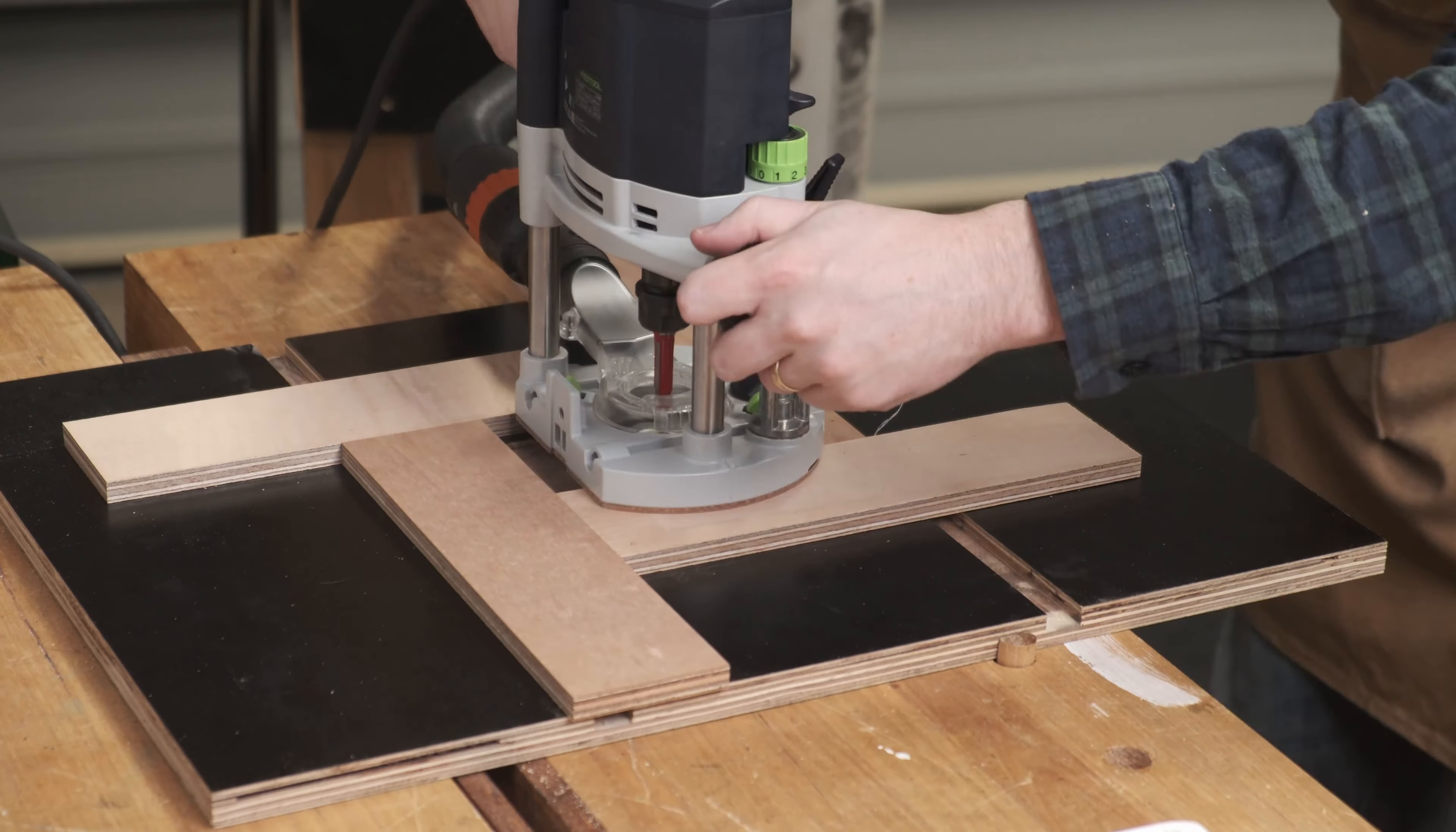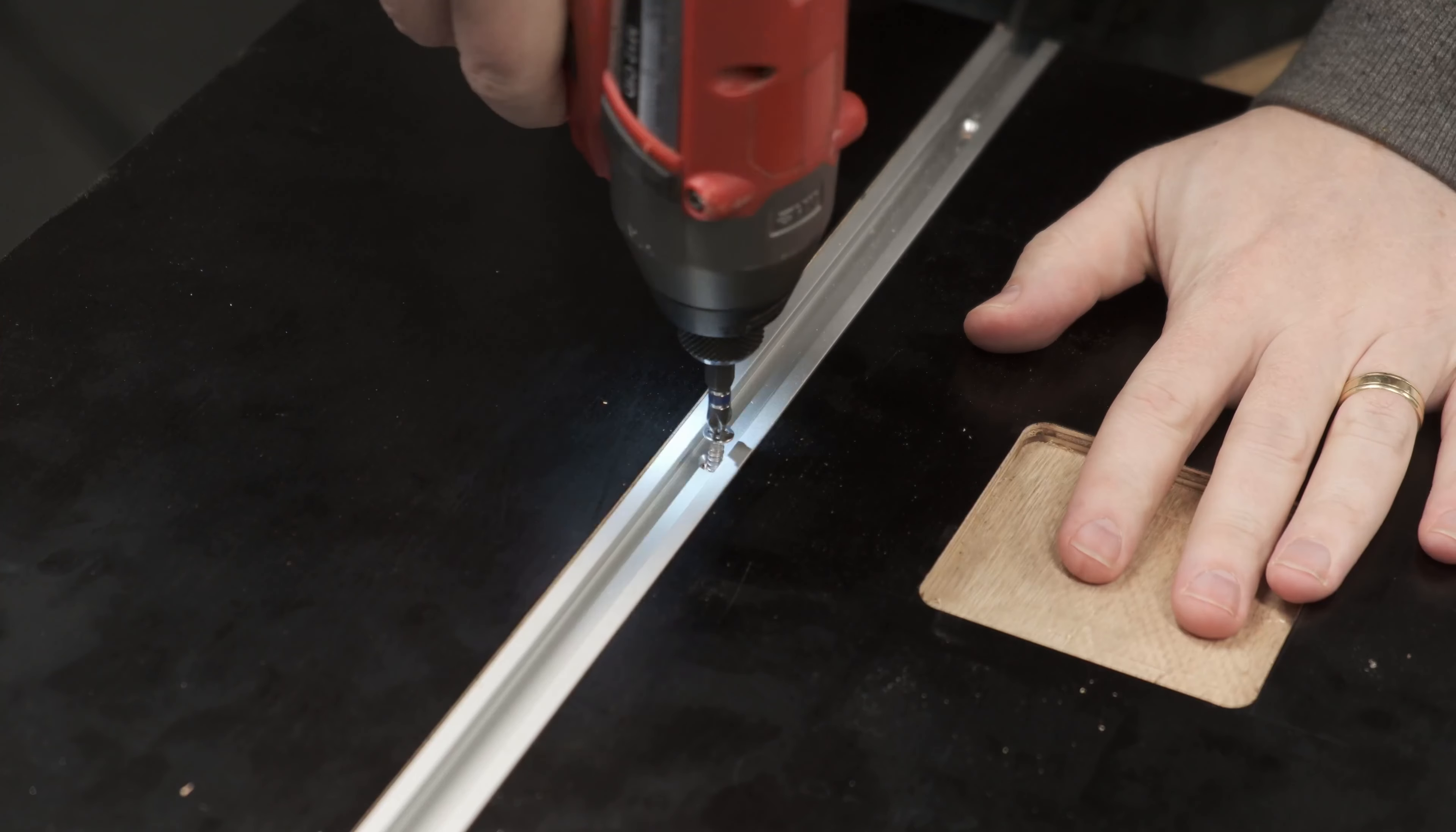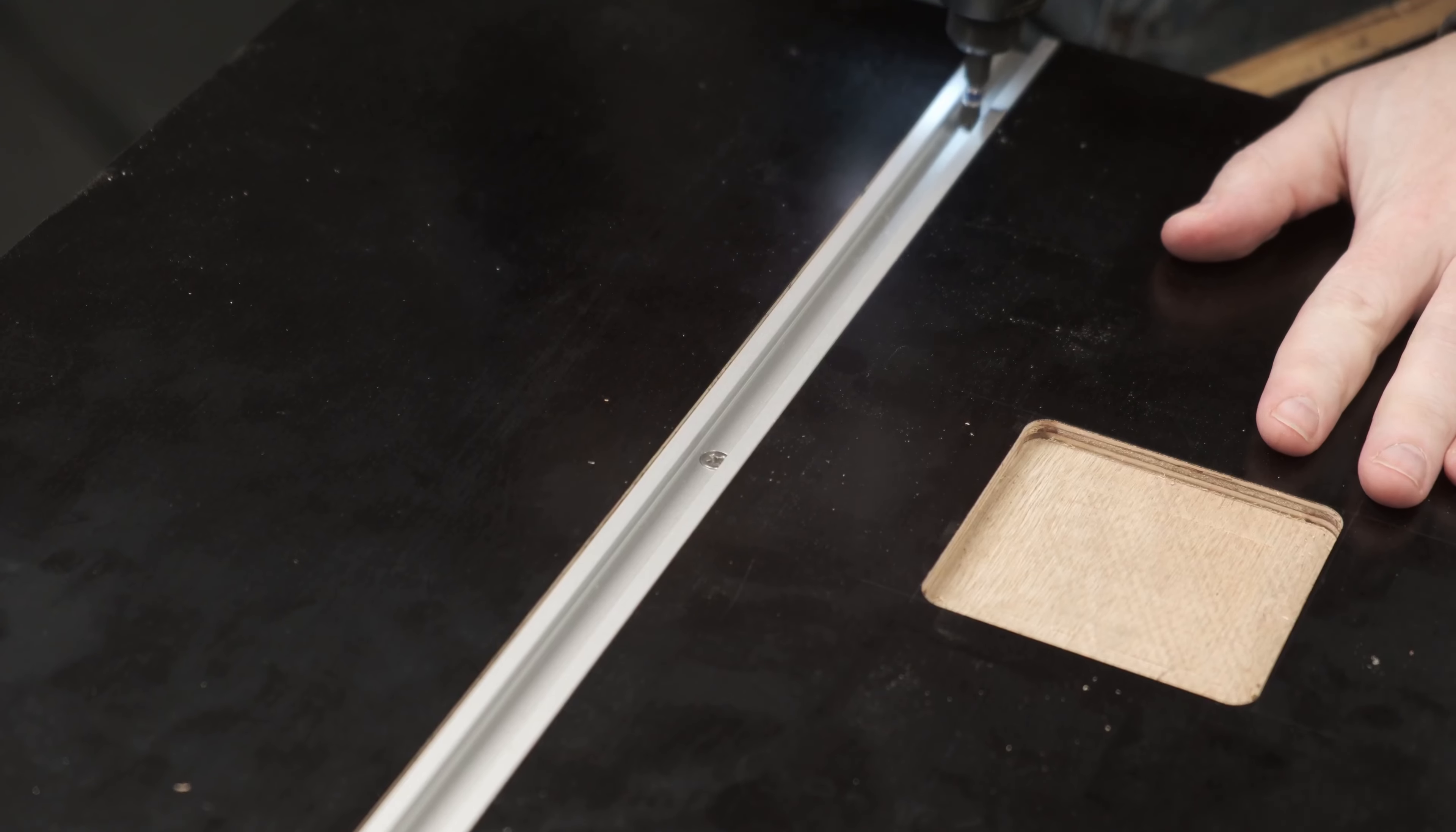The particular screws that came with this particular T-track are just a hair longer than the material or what's left of the material after it's been dado'd out. So I'm adding this piece of melamine underneath it and that'll give somewhere for the screws to go, but also when I'm mounting the whole thing together I can screw up through the melamine and into the plywood and it'll be a little bit more secure.